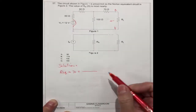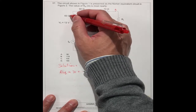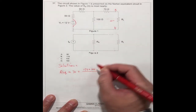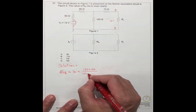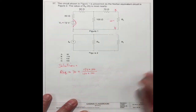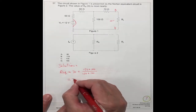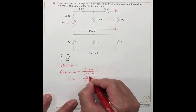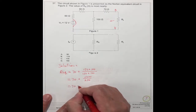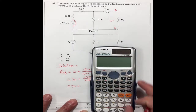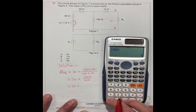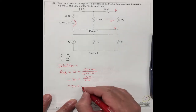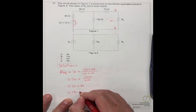So we can do the calculation. This one plus this one is 150 times 100, divided by 150 plus 100. So we get 70 plus 15,000 divided by 250, which equals 70 plus 60, equal to 130.